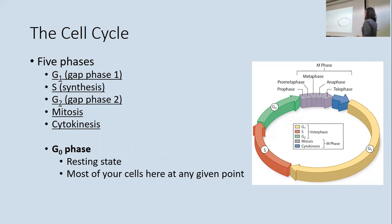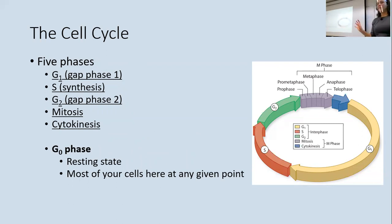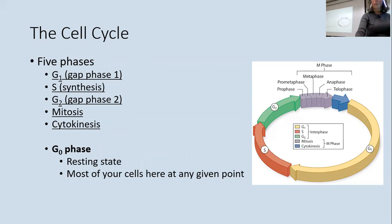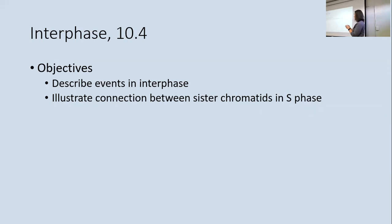Most of the time your cells aren't dividing — they're just hanging around doing cell stuff in what's called G0, a resting state. If a cell does enter the cell cycle it starts with interphase. During S phase, chromosomes are replicated. Each chromosome has a centromere — a constricted central region — where when a chromosome makes a copy of itself, it stays attached to that copy.